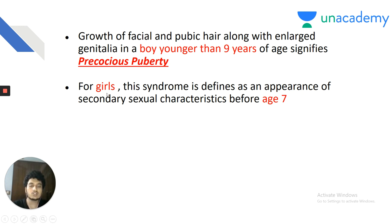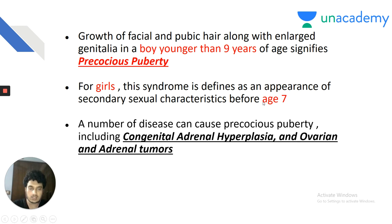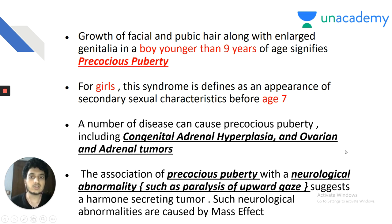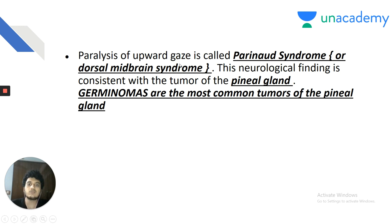Precocious puberty in girls is defined as secondary sexual characters before age 7. Causes include congenital adrenal hyperplasia — the most common cause overall — and ovarian and adrenal tumors. The association of precocious puberty with neurological abnormalities such as upward gaze paralysis suggests a hormone-secreting central tumor. Paralysis of upward gaze with compressive symptoms is called Parinaud syndrome or dorsal midbrain syndrome.